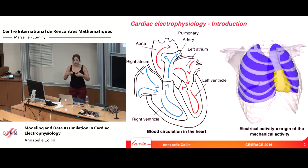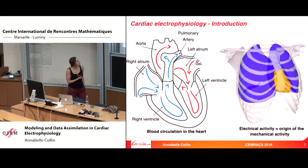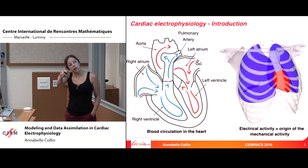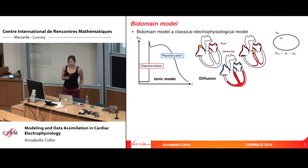Cardiac electrophysiology is the study of the electrical waves over the heart which trigger the muscle contraction. In cardiac electrophysiology, we are interested in three potentials: the intracellular potential, the extracellular potential, and the transmembrane potential, which is the difference between both.